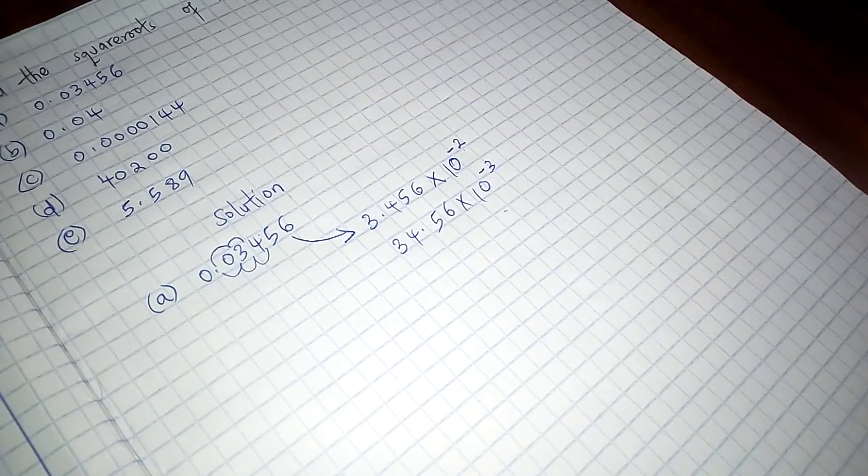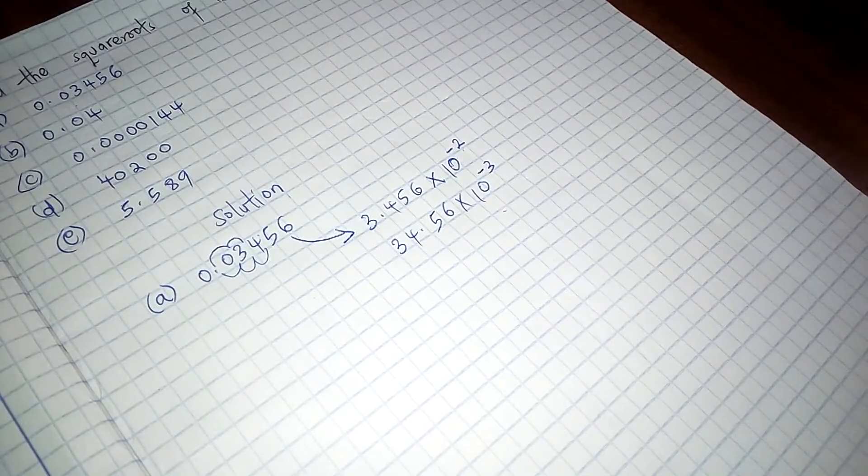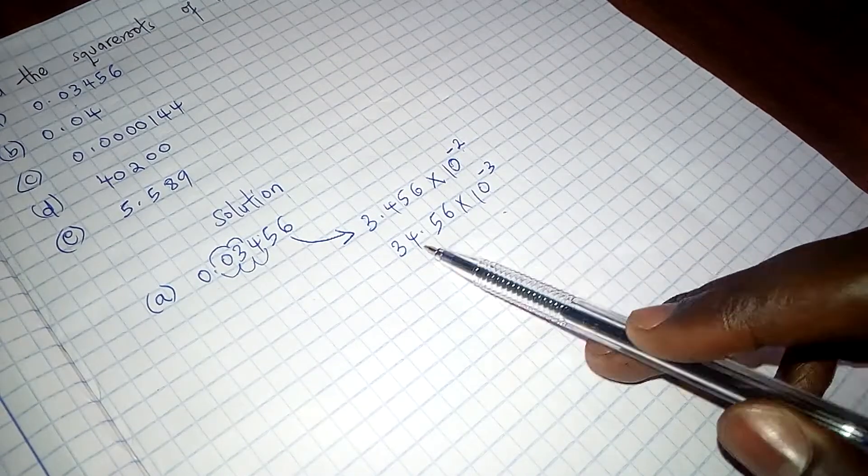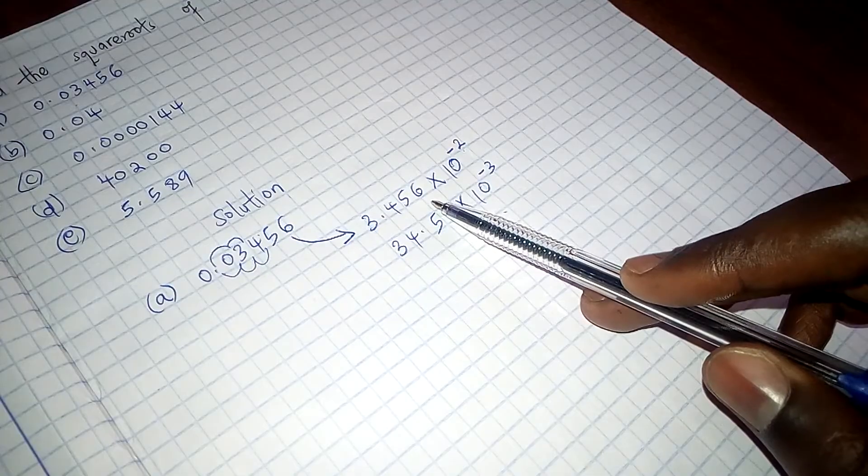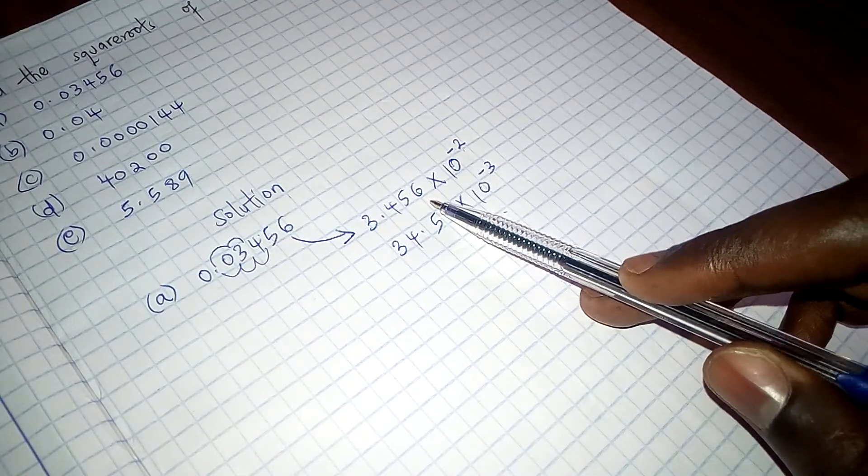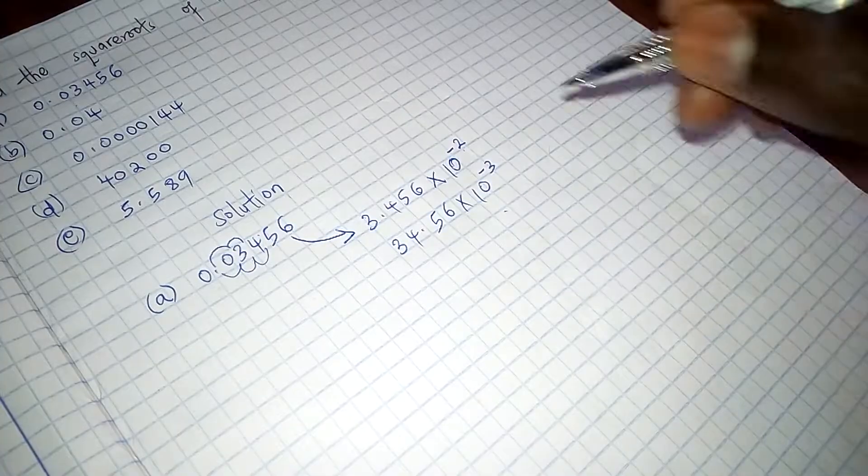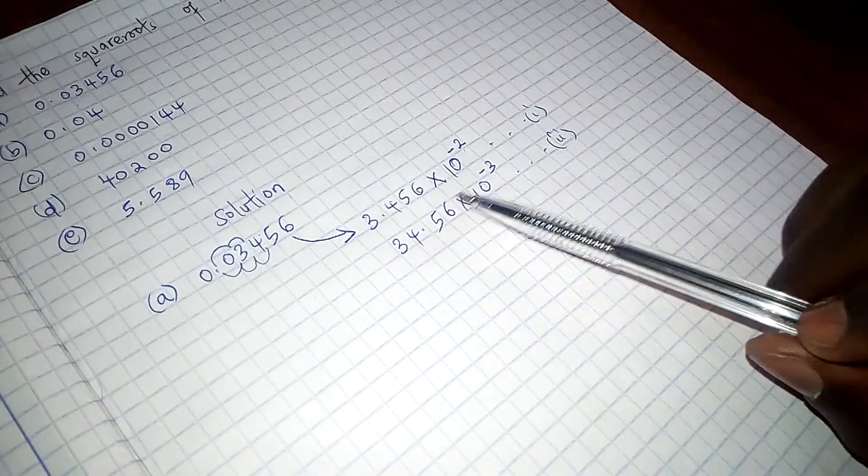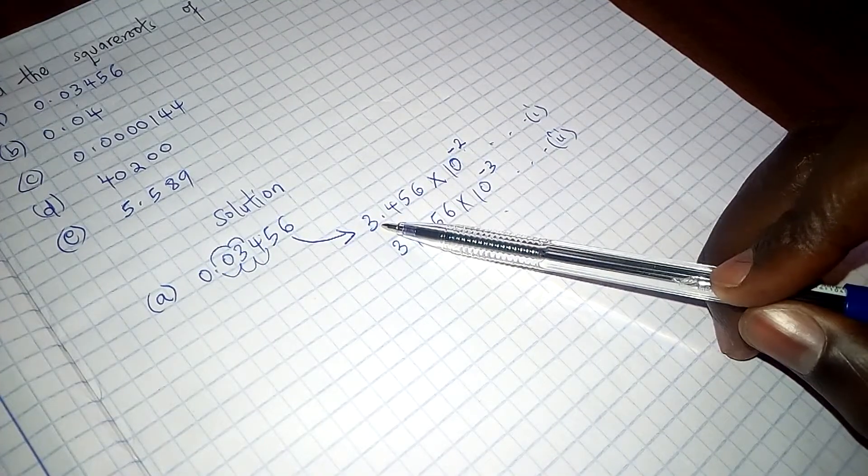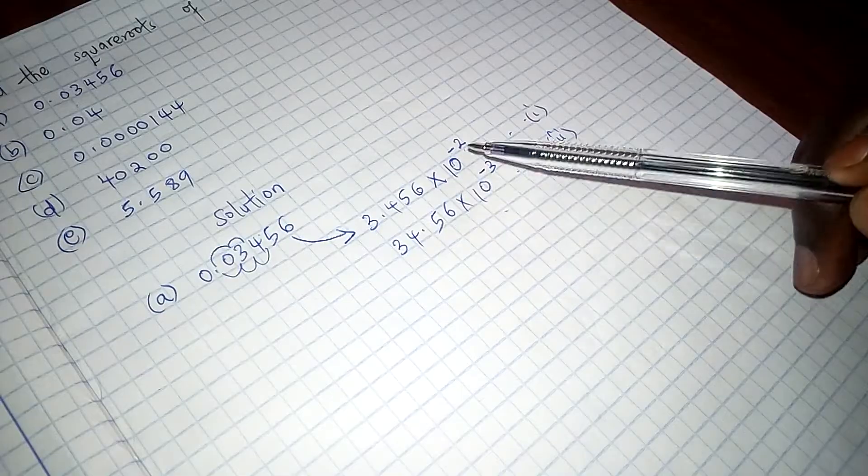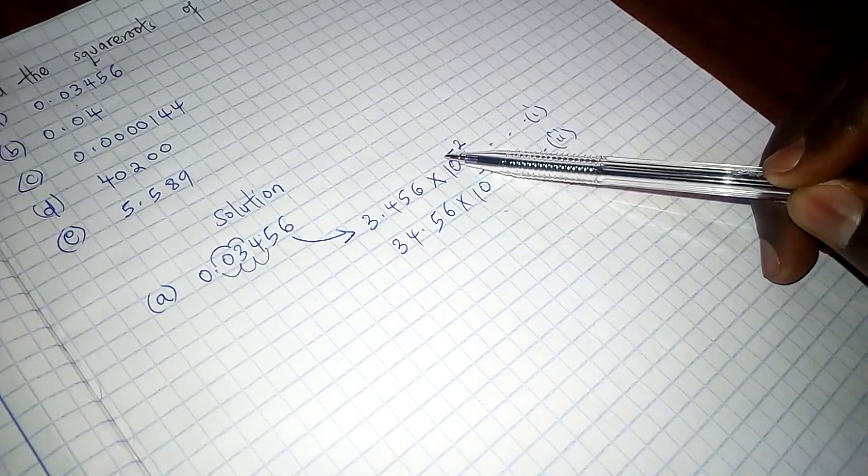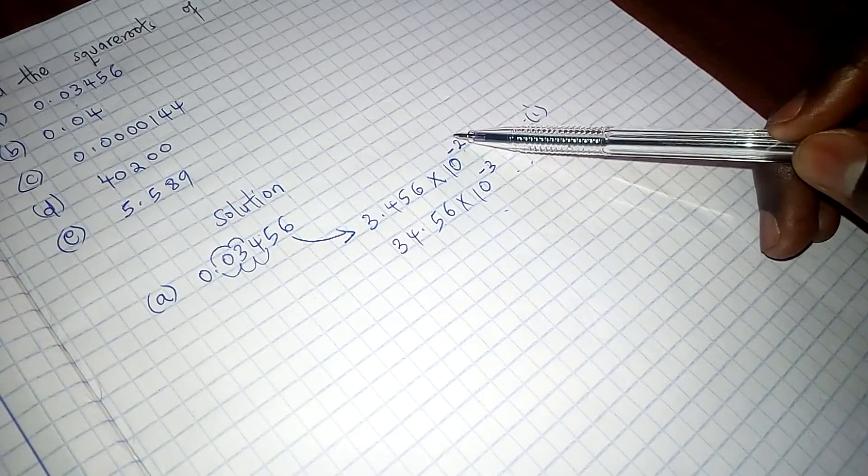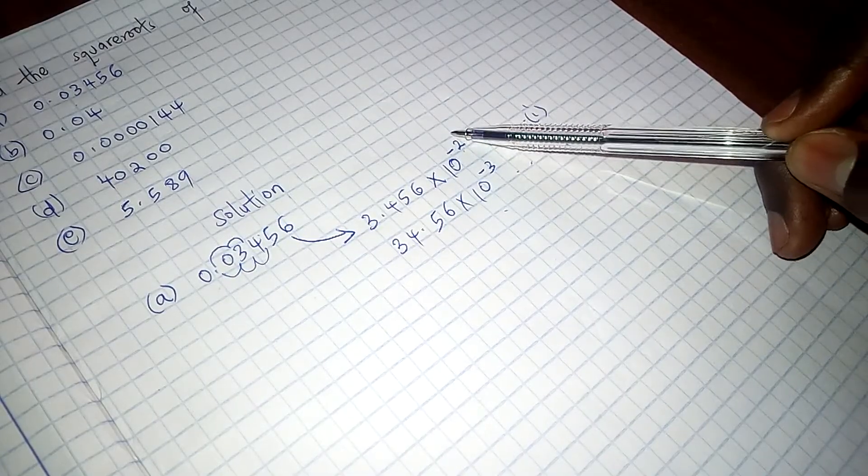So when we looked at the square root tables, we realized that this range we can get their square roots, this range we can as well get their square roots. But which one is the best to settle with among these two? If we can call this Roman 1 and we can call this Roman 2. Roman 1 could be the best to settle with by the fact that we can easily predict the square root of 10 raised to power negative 2, just because the power, the index here is an even number.